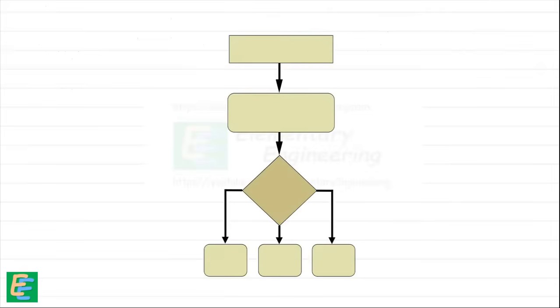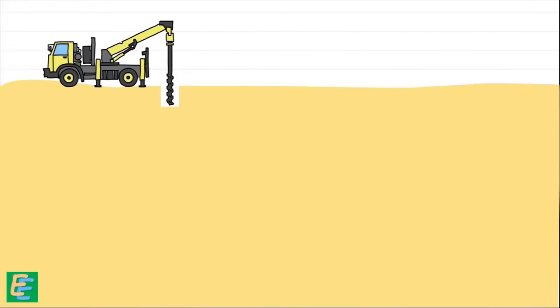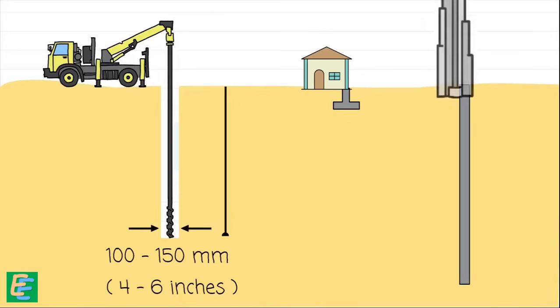The test procedure is very simple. We take our drilling machine to the site and start creating a borehole into the ground. The size of the borehole is about 100 to 150 mm. The depth of this borehole depends on how deep we need to test the soil, whether we are assessing shallow layers for small structures or going deeper to evaluate soil conditions for massive constructions.